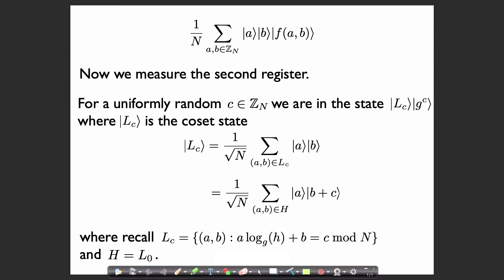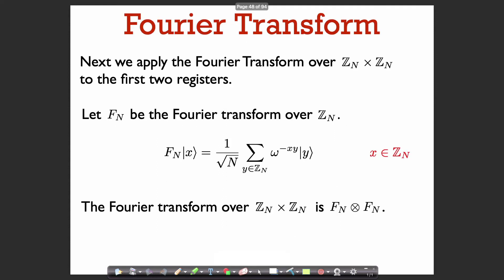That's the state we're in now. As a third step, we're again going to apply the Fourier transform. Since the group we're working in now is Z_n times Z_n, we want to apply the Fourier transform over Z_n times Z_n. The Fourier transform over Z_n maps the state |x⟩ to 1 over root n times the sum over y in Z_n of omega to the minus x times y, times |y⟩, where omega is a primitive nth root of unity.